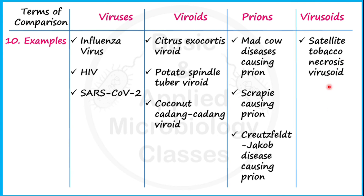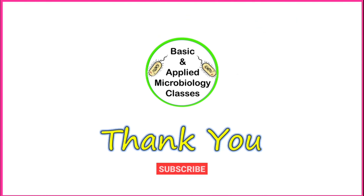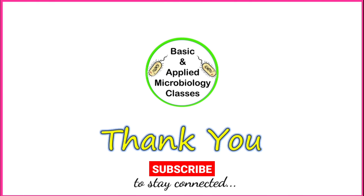Virusoids are also called subviral agents because they are found inside the helper virus to become functional. That covers all the differences among these biological agents. I hope this content will really help you — thank you so much, keep watching.